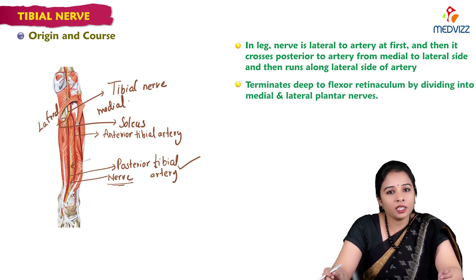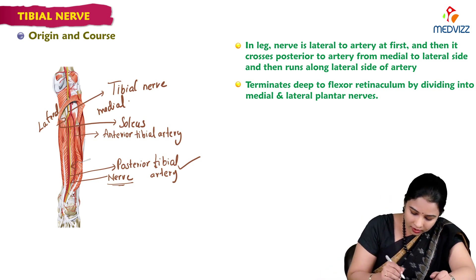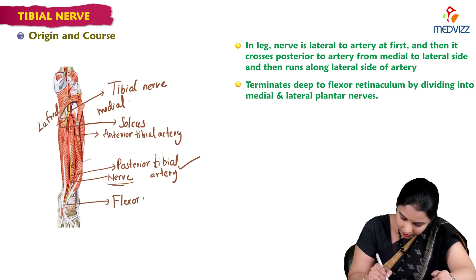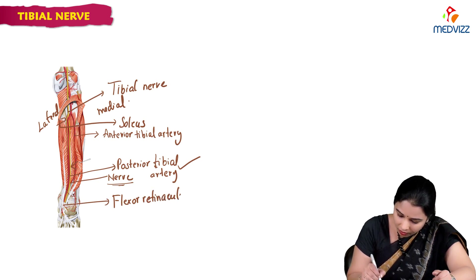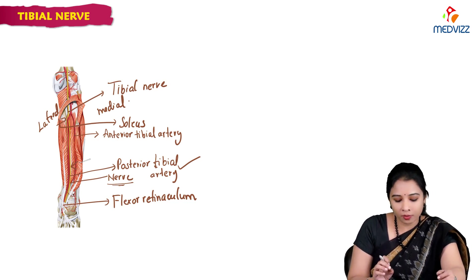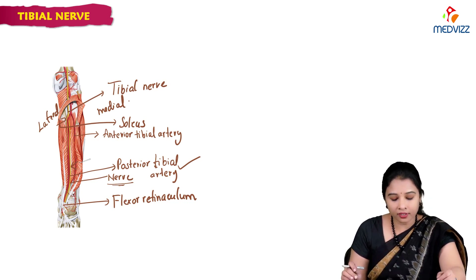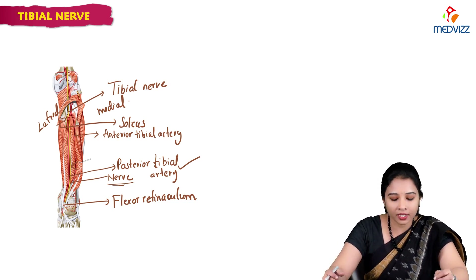The tibial nerve terminates deep to the flexor retinaculum by dividing into two plantar nerves. Here is the flexor retinaculum — a modification of the deep fascia, similar to the flexor retinaculum in the upper limb — where the tendons and neurovascular bundle pass deep to it. It then divides into medial and lateral plantar nerves.